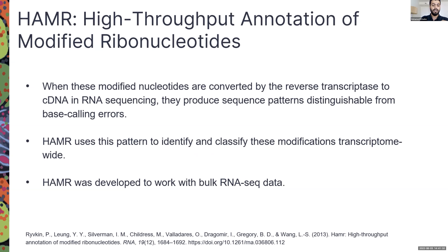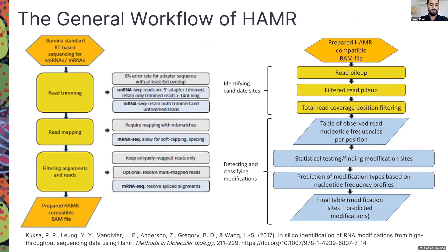Unfortunately, HAMR was developed to work with bulk RNA-seq data. The general workflow is shown here. On the left side is preprocessing — the input is raw RNA-seq data. We do the normal preprocessing until we get the mapped reads in a BAM file format, but we have to take care of specific qualities in the alignment. For example, we need to allow for mismatches, which is critical because HAMR works on these mismatch patterns to identify modifications.